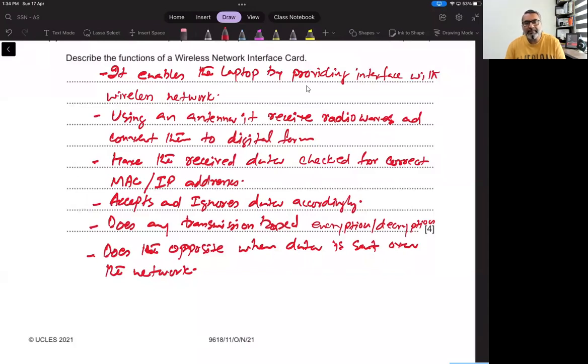It enables the laptop by providing interface with the wireless network that it can now take data and deliver the data over the wireless network. Using an antenna, it receives radio waves and converts them into digital form. It does the opposite when the data is going back from digital form to radio waves. Having received data, check for correct MAC and IP address. If it is meant for it, it keeps it. Otherwise, it ignores it. There's any transmission-based encryption. If the transmission is based on any encryption or decryption, it does that.